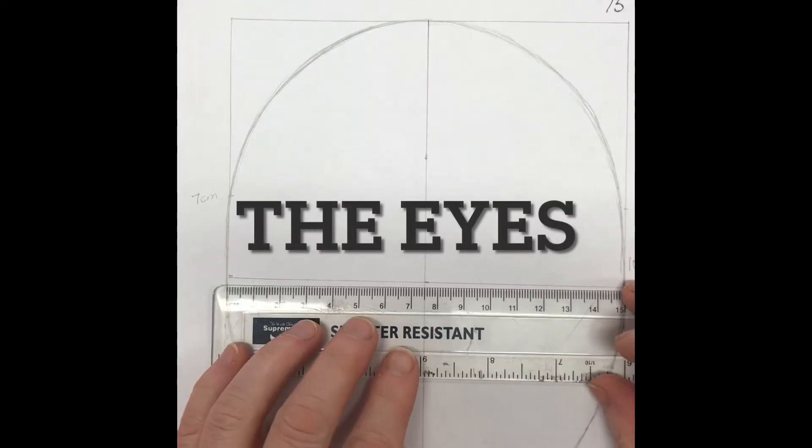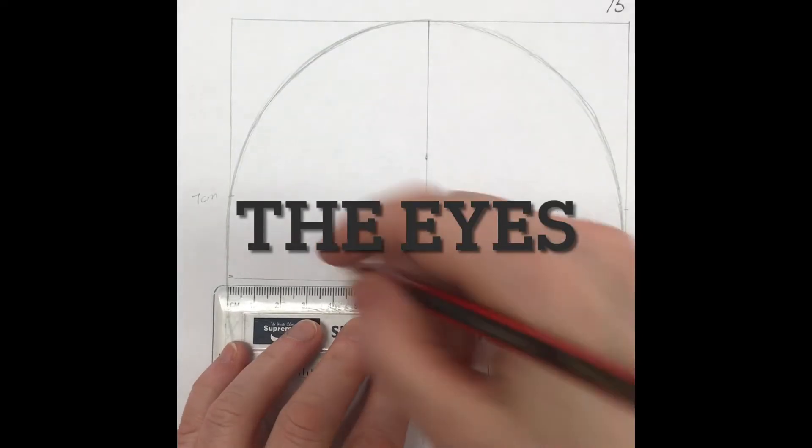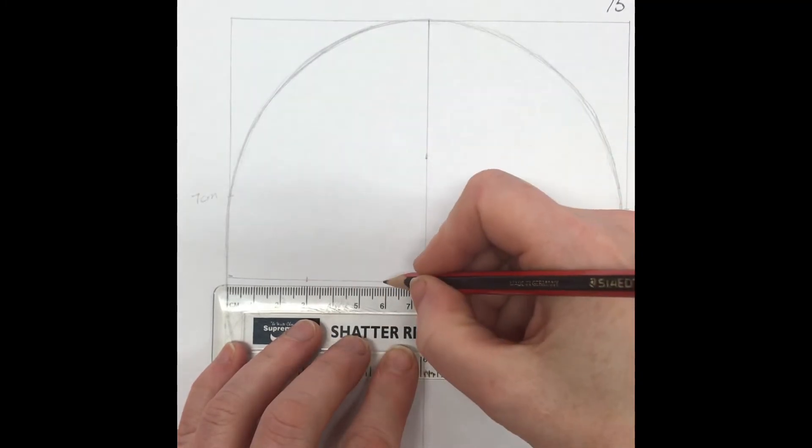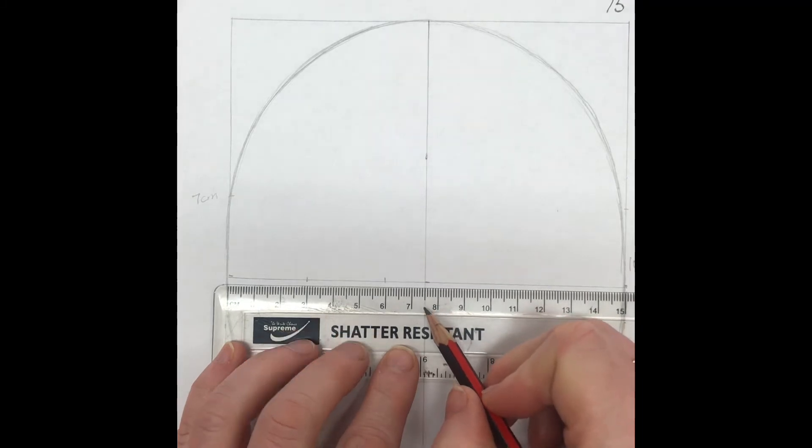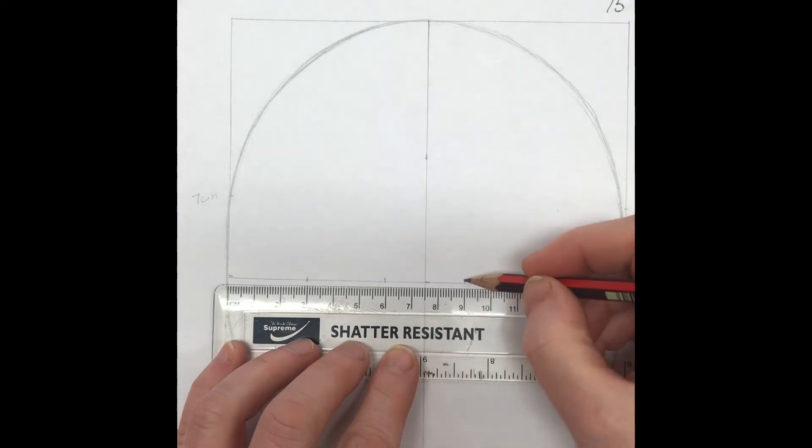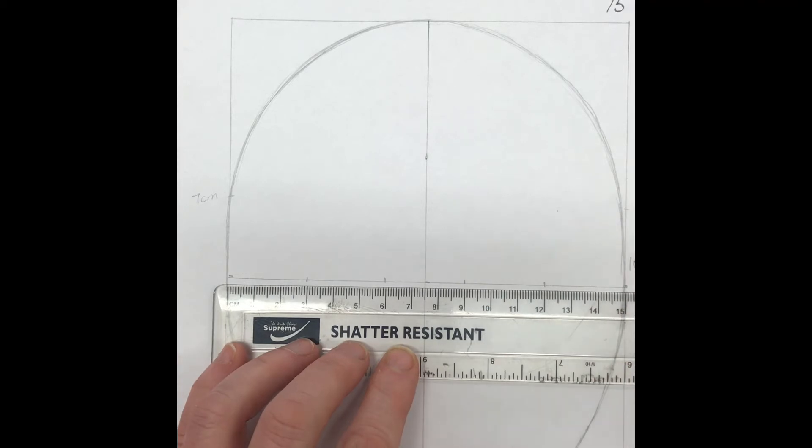You're going to place your eyes along the middle line. There's a 15 centimeter line and five eyes should fit, so that is three, six, nine, and twelve. Your eyes should be in the second and fourth place.